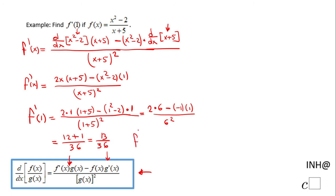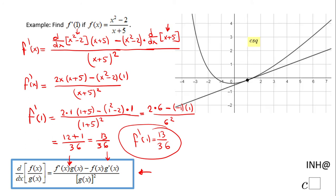So f prime of 1 is 13 over 36. Of course, don't forget the derivative means the slope of the tangent line. In this case we're looking at the slope of the tangent line at 1, and you see the tangent line, it should be 13 over 36.